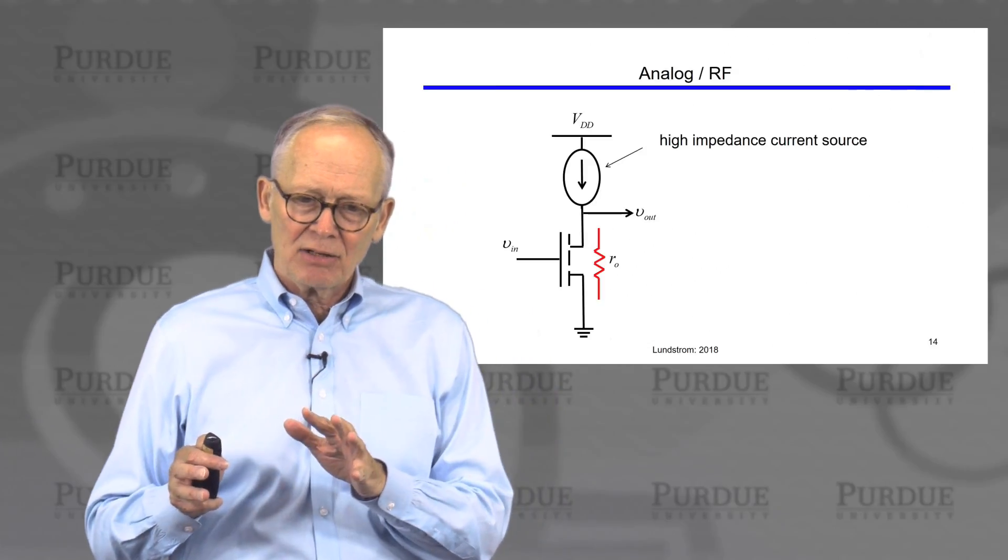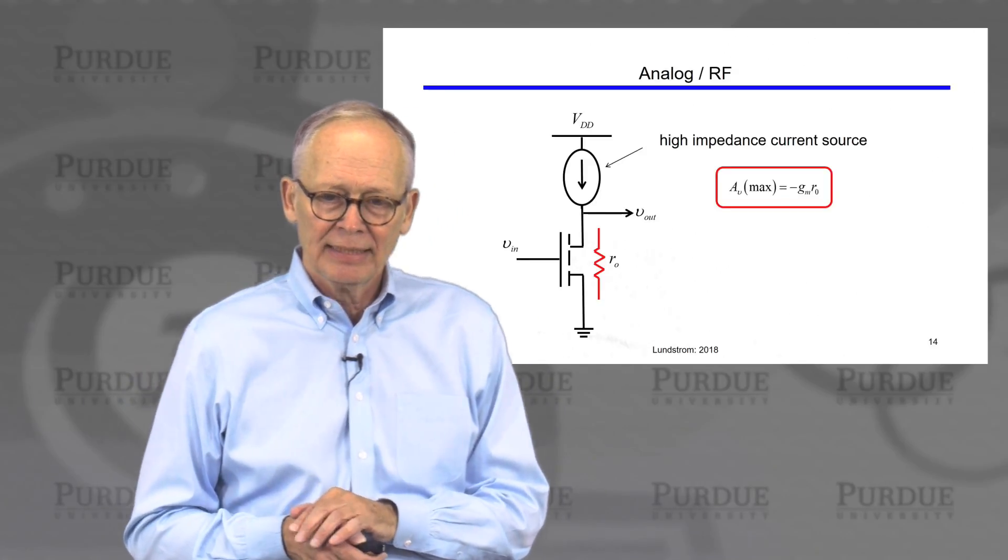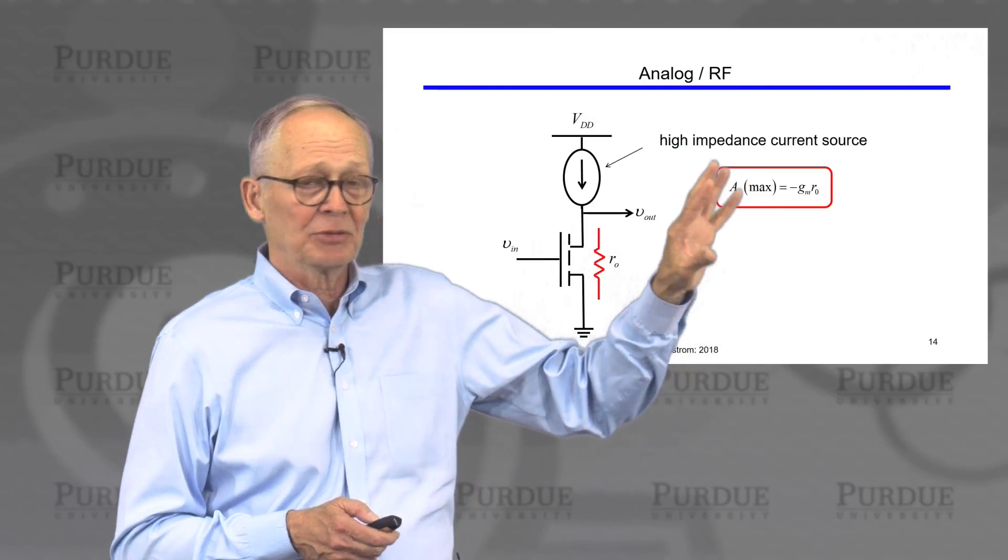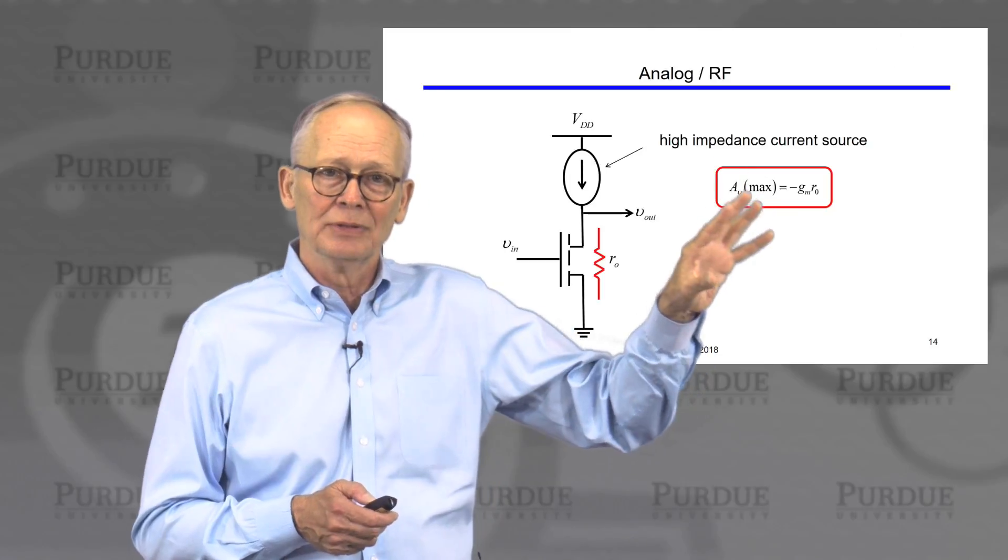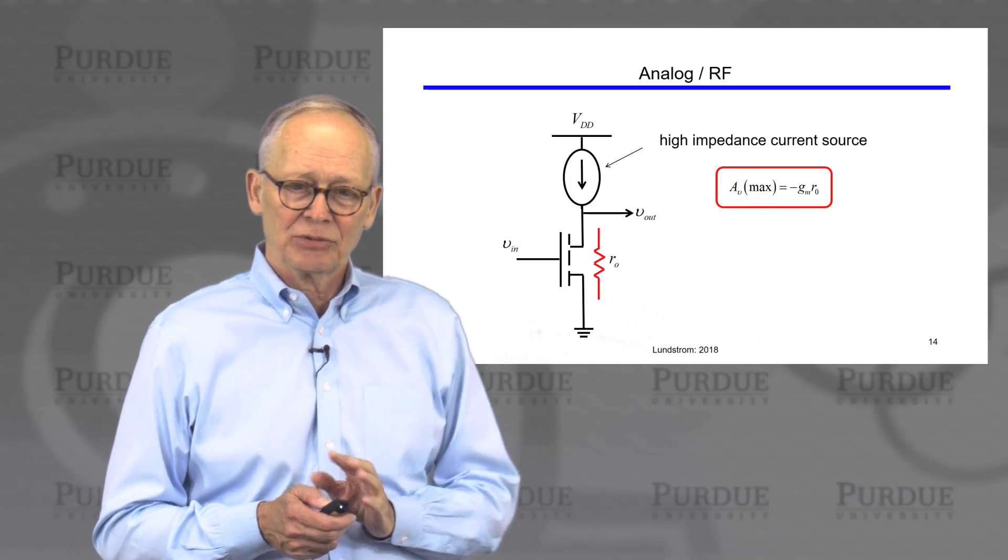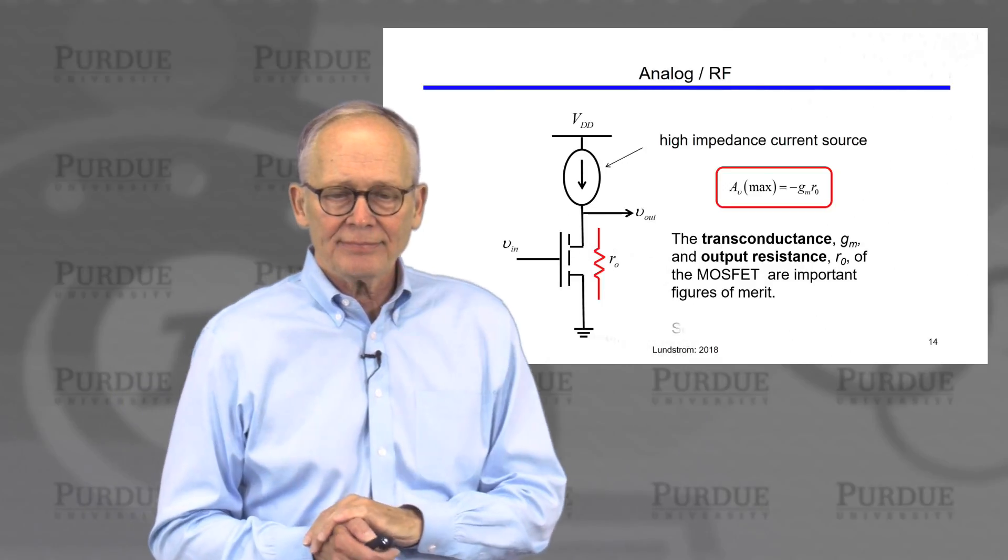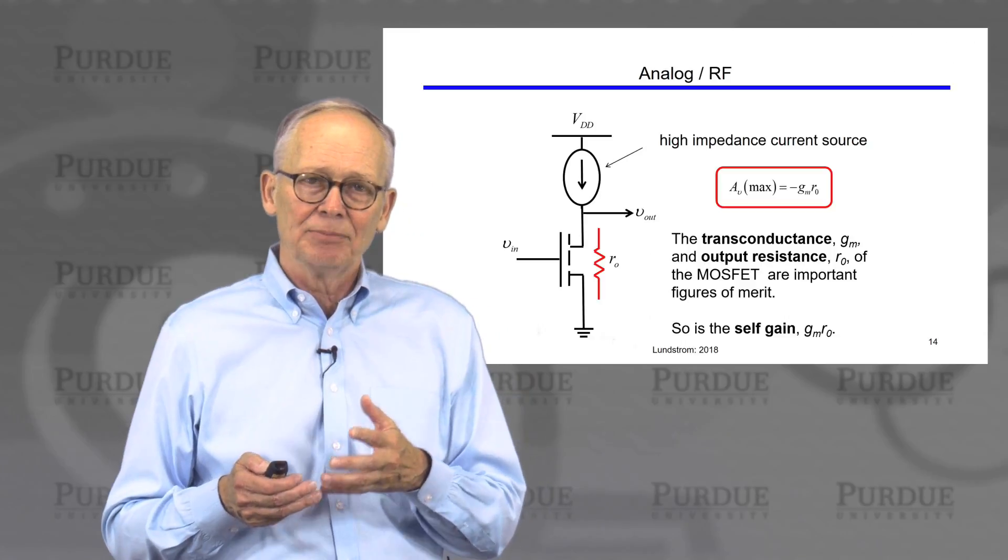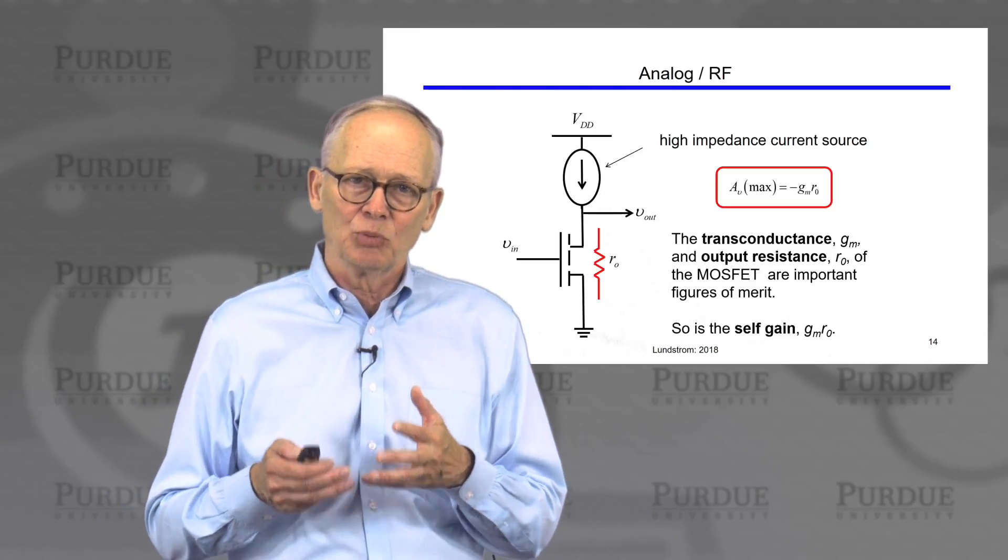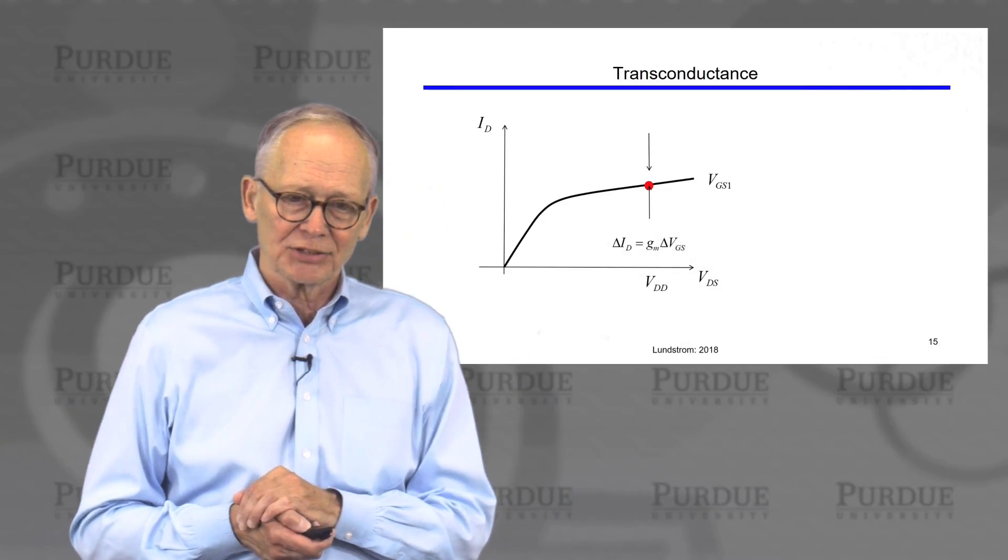When we switch to analog, we had a couple of important figures of merit. The maximum gain is an important figure of merit and it consists of two key device metrics: transconductance and output resistance. So we multiply the two together, we get what's called the self gain. That's the maximum gain that would be possible with this transistor in any type of single stage amplifier circuit.